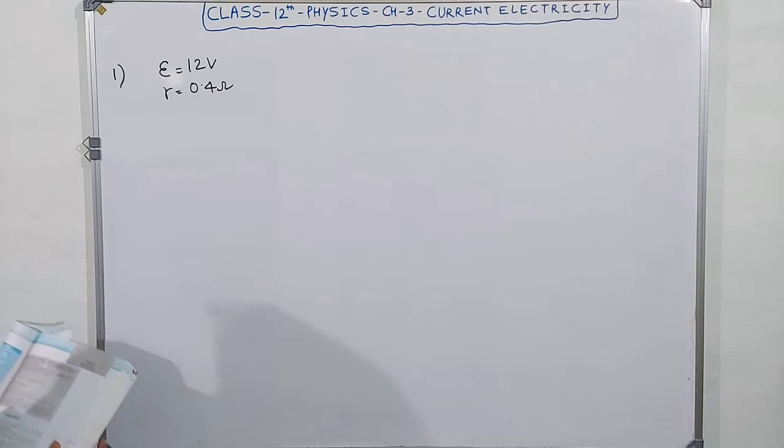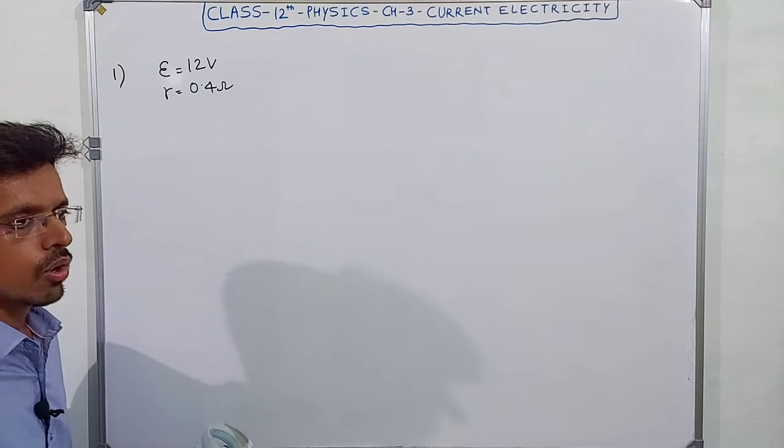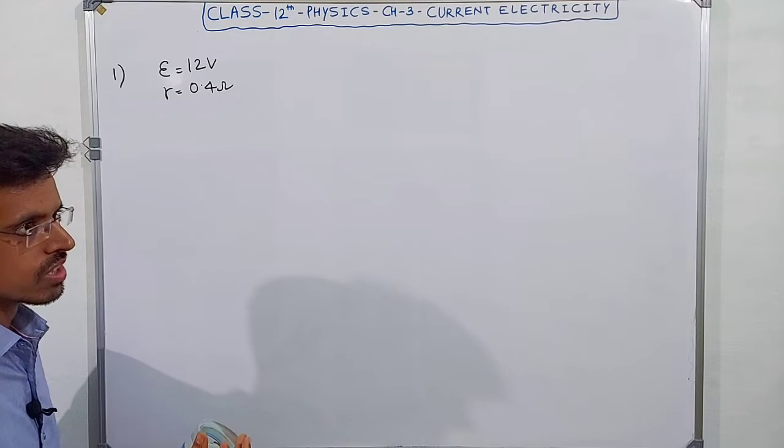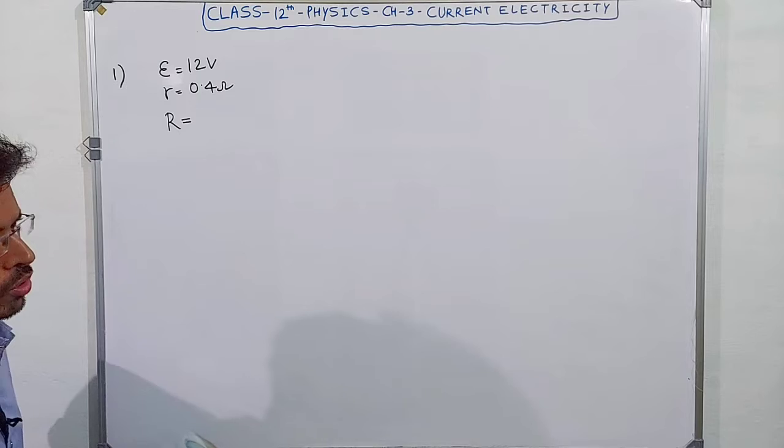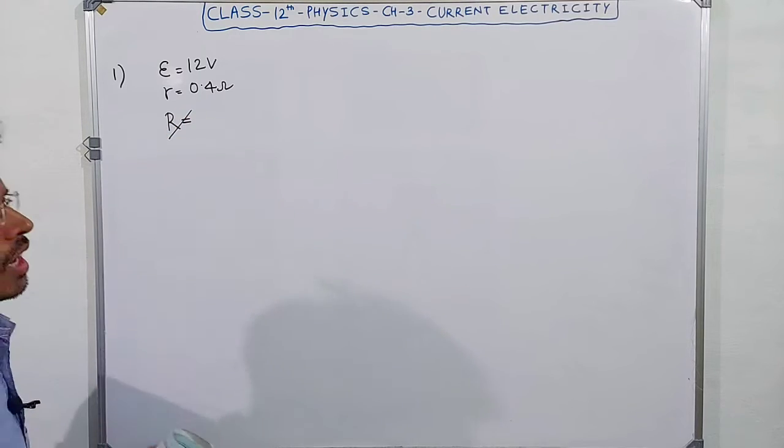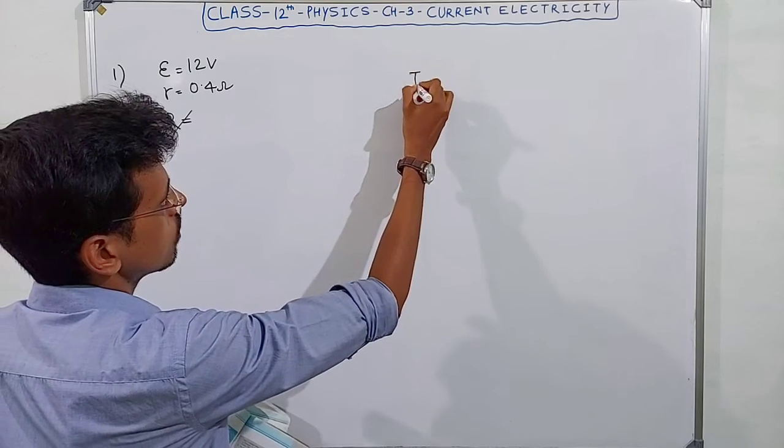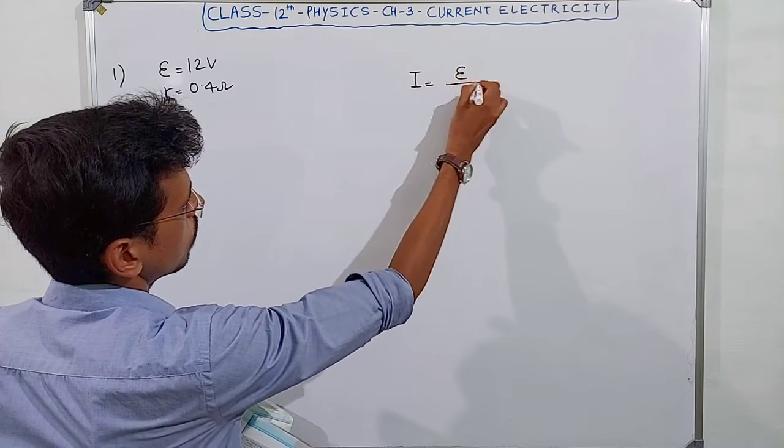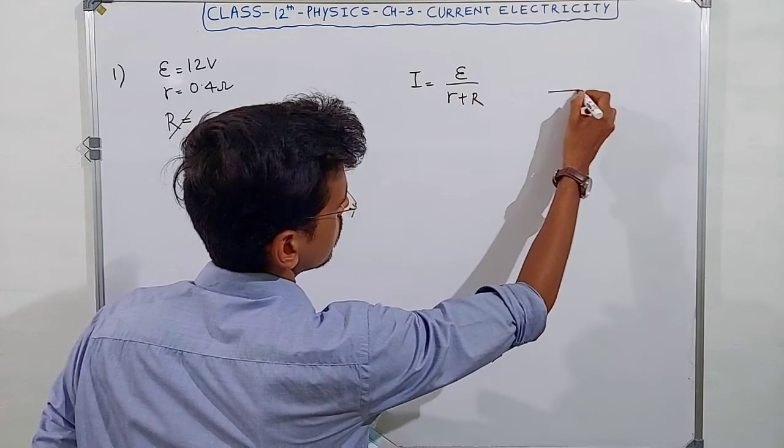what is the maximum current that can be drawn from the battery? If there is a battery with internal resistance, we want to load it with external resistance.